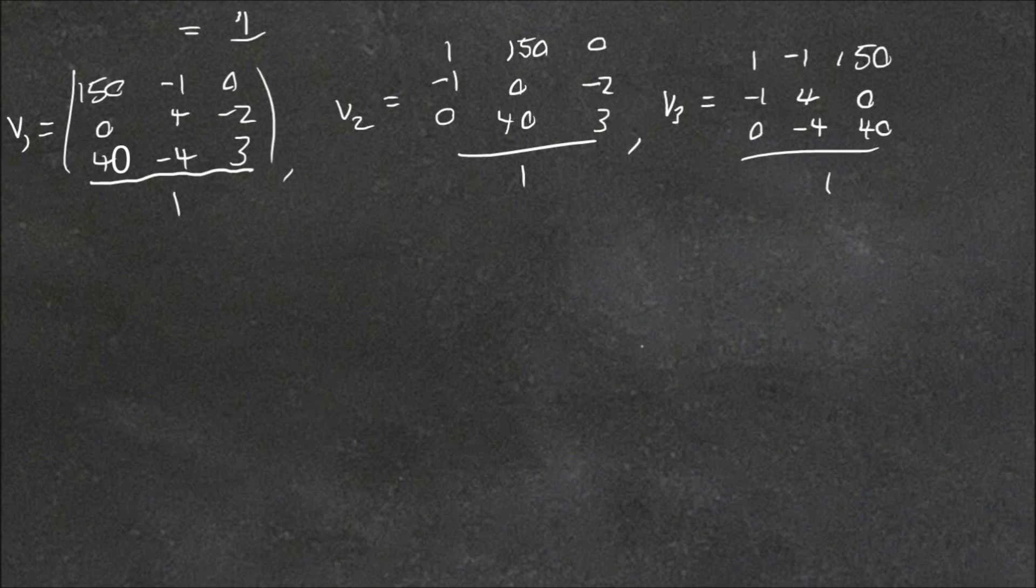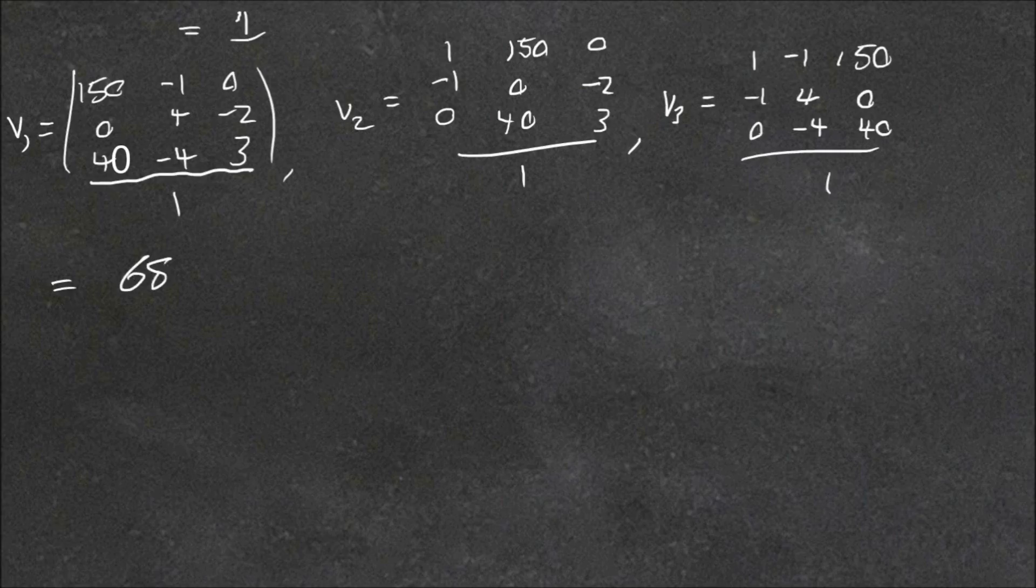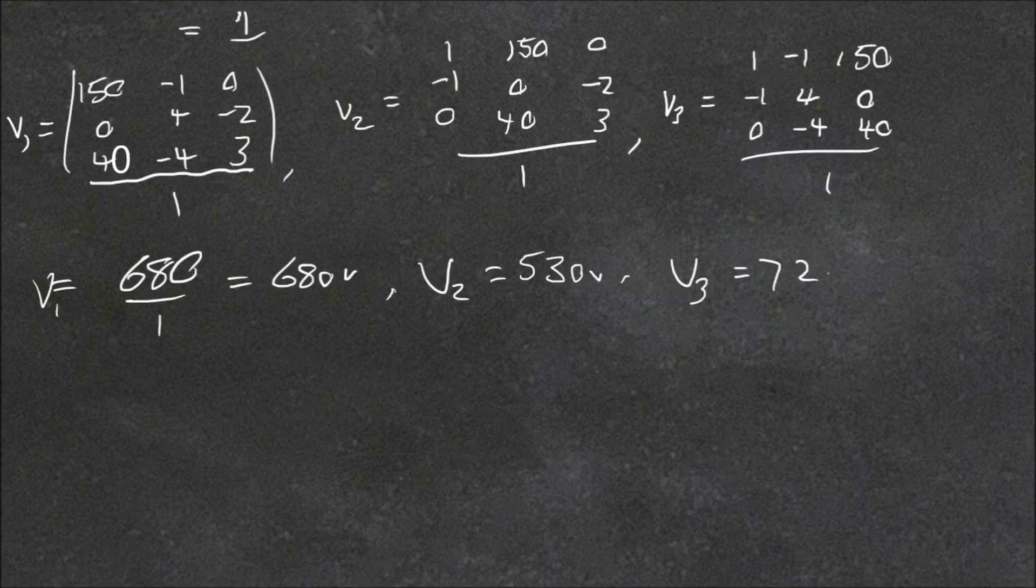So solving these, we look at the determinant of this. So if you work that out, you'll get 680 divided by our old determinant, which is 1. V1, so that's 680 volts for V1. V2 is 530 volts, and V3 is 720 volts. And so that's the solution of the voltage at our nodes.